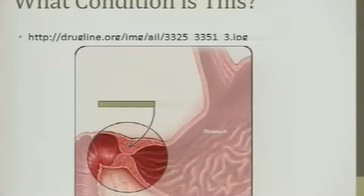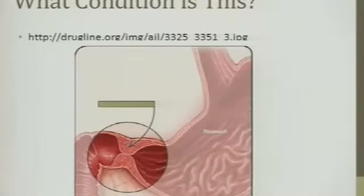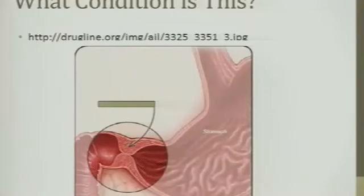This condition is pyloric stenosis — a great picture of the connection between the stomach and the duodenum. Beneath it you can see lumpy-bumpy glandular tissue, which is the pancreas nestled right into the duodenum — it's that close.